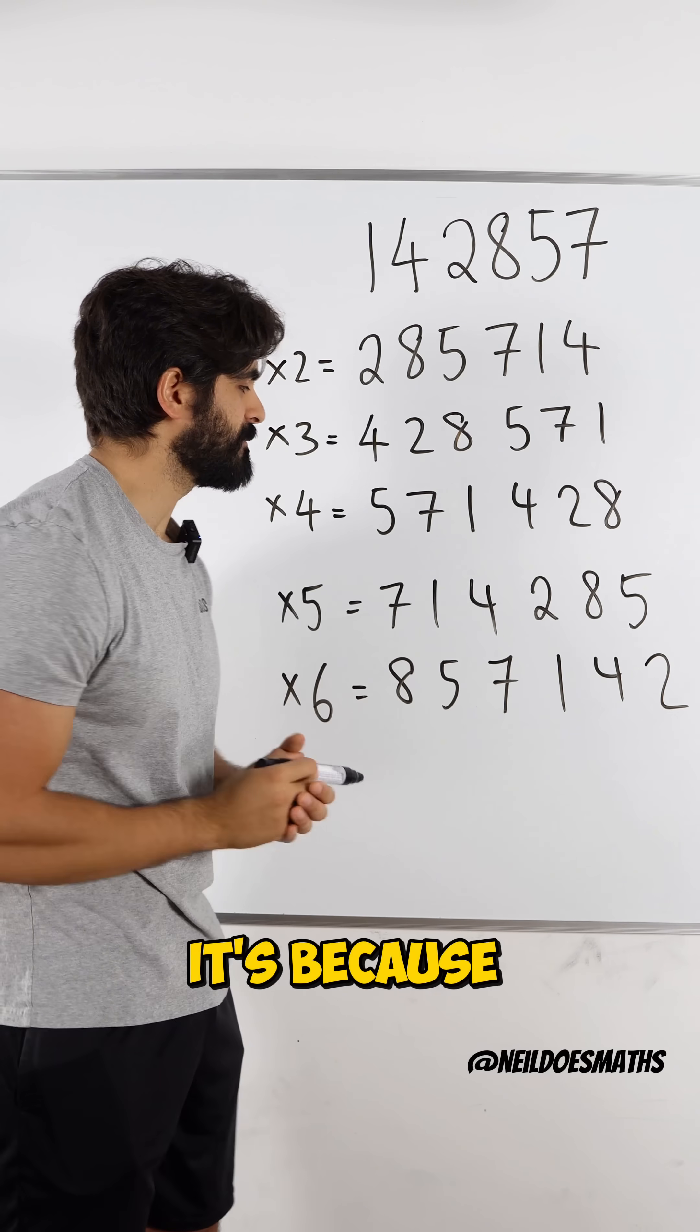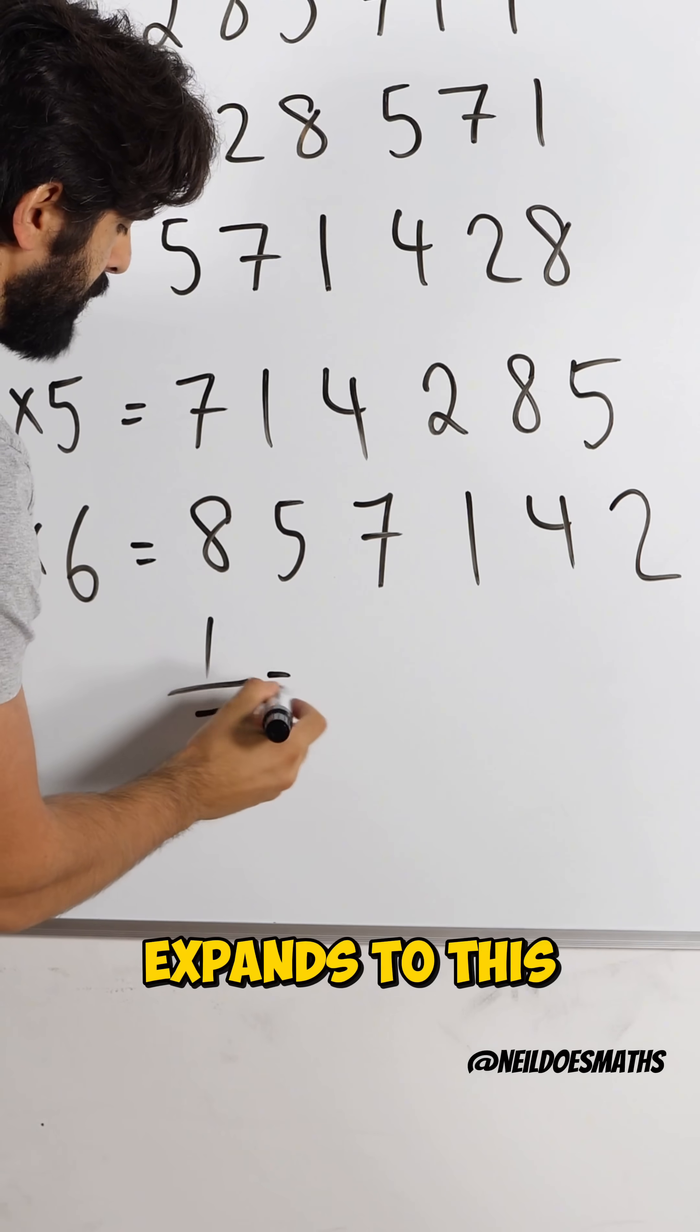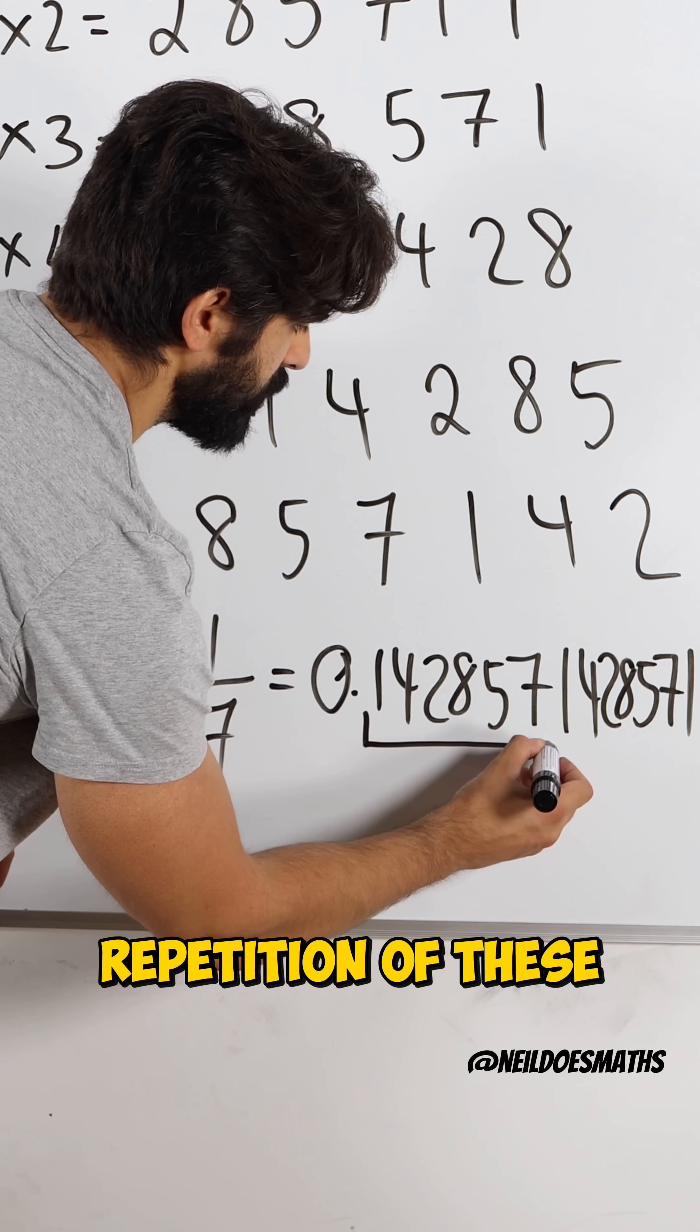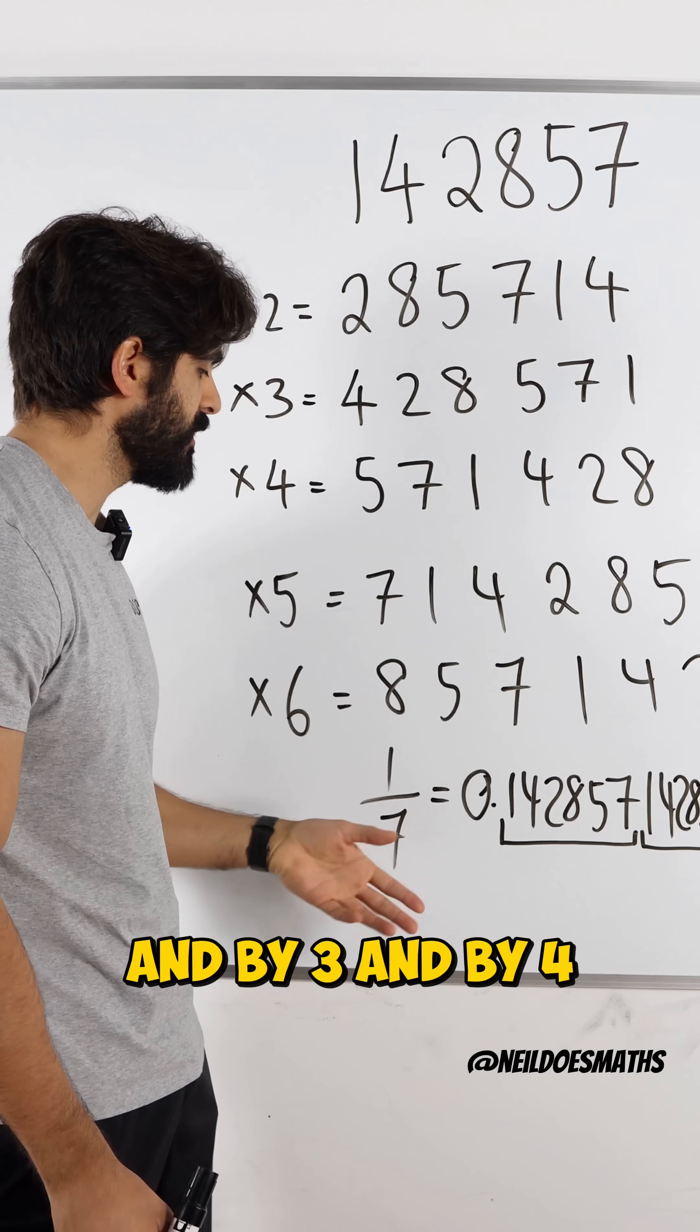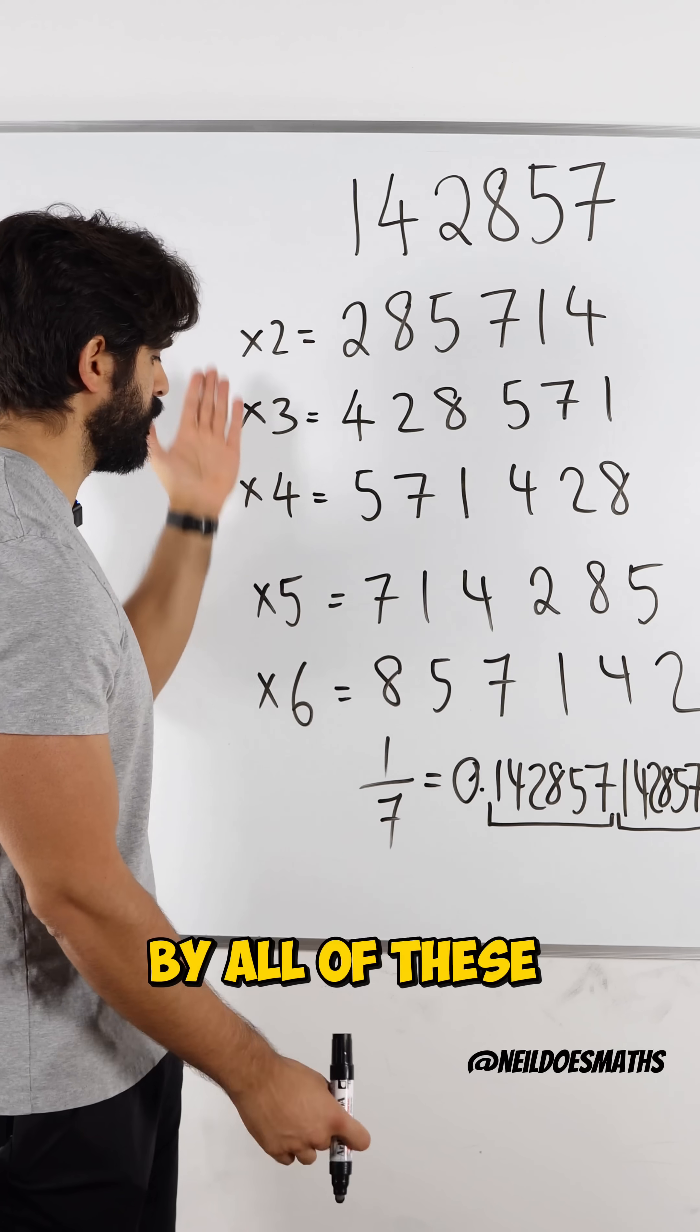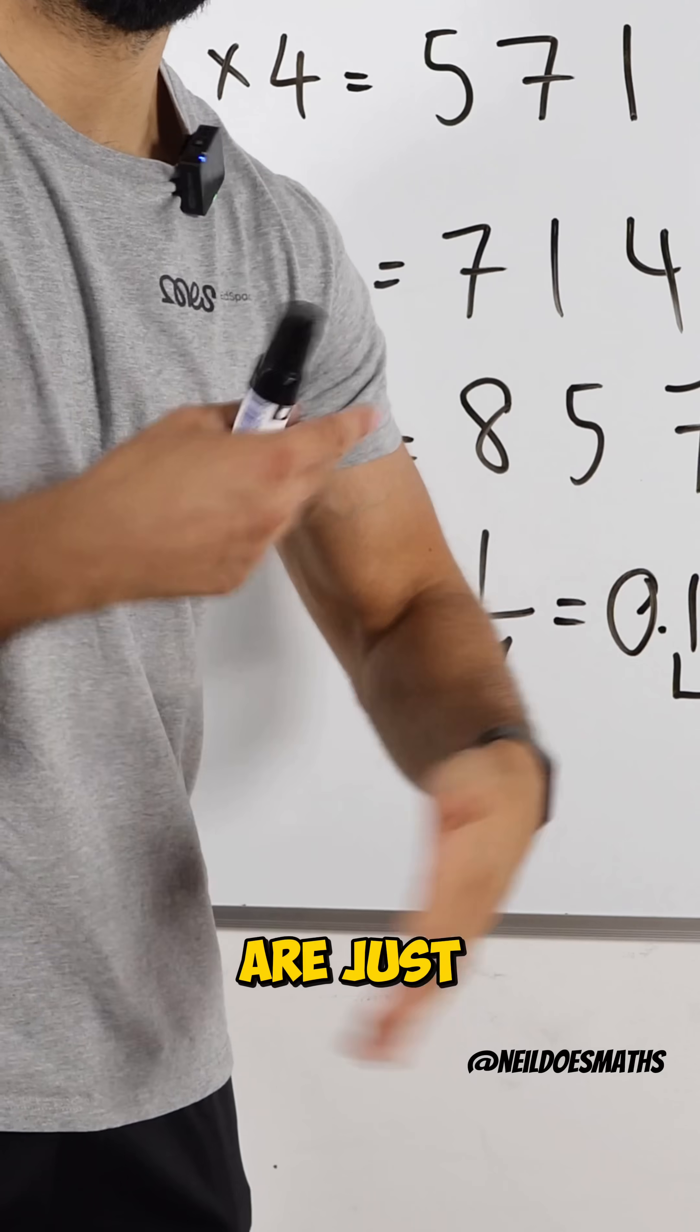Now, why is that happening? It's because of the fraction 1/7, which expands to this. And what you might notice with 1/7 is that the repetition of these six digits is the exact same as this one. So when you multiply it by 2 and by 3 and by 4, all you're doing is essentially multiplying 1/7 by all of these digits, and all of these repeating numbers are just shifting around.